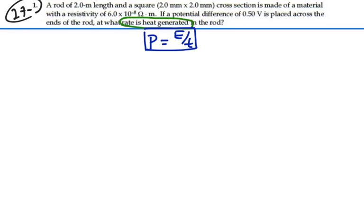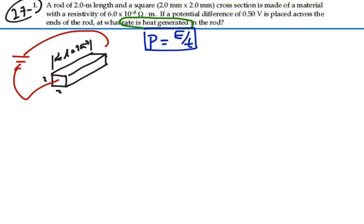Okay, so that's where we're going. Now we have a rod that looks something like this. It's 2 mm by 2 mm in cross-sectional area, and the length is 2 meters. We're going to connect a voltage to this, like a battery over here, and the battery has a voltage of 0.5 volts.